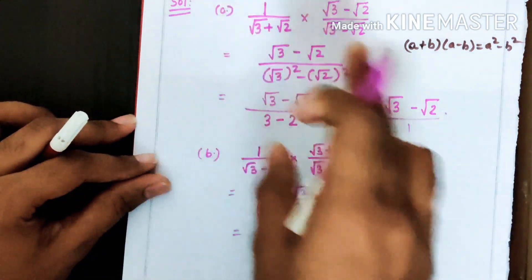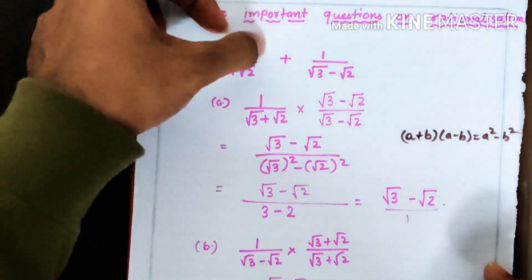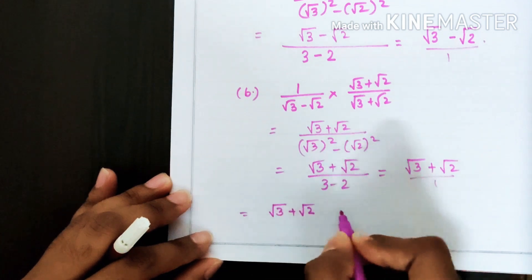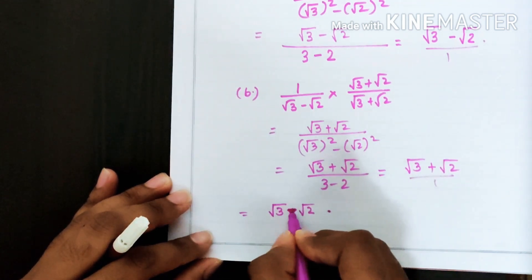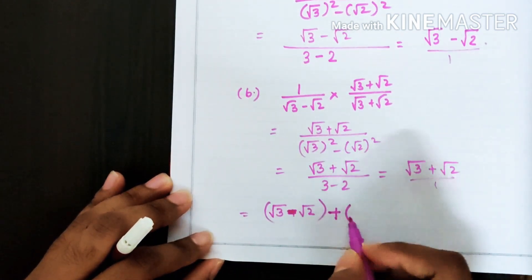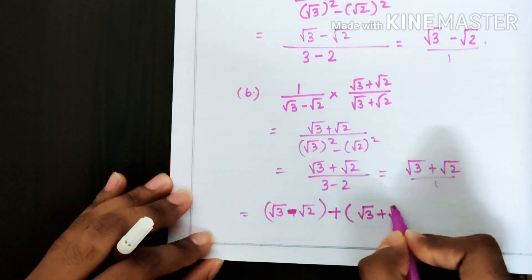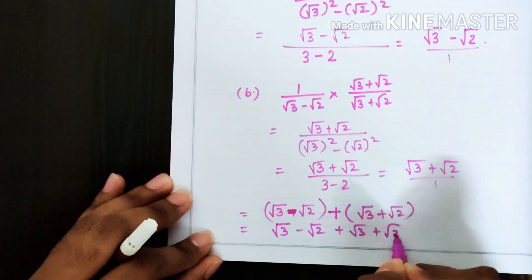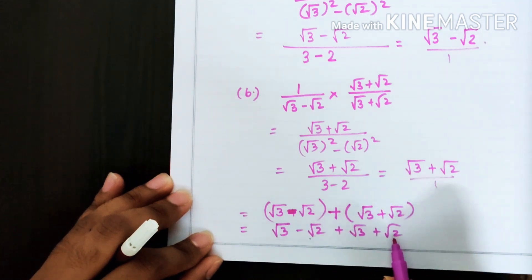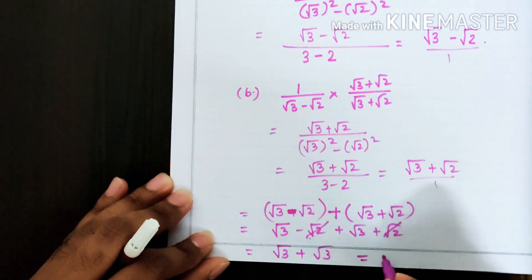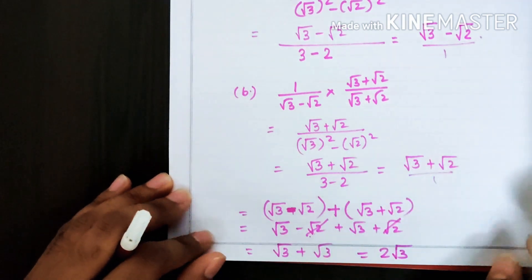Now we need to add both terms. Our question was to rationalize and add. So we add (√3 − √2) + (√3 + √2). Opening both brackets: √3 − √2 + √3 + √2. The −√2 and +√2 cancel each other, leaving √3 + √3 = 2√3. So 2√3 is the final answer.